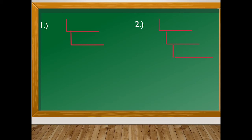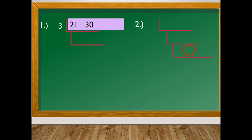Looking at number 1 — the LCM of 21 and 30. We have 3 times 7 times 10, so the LCM is 210. Correct!